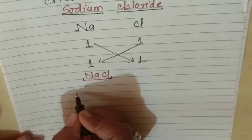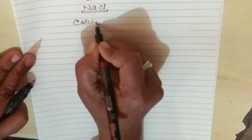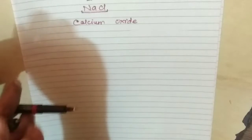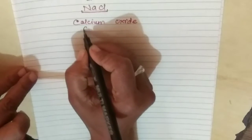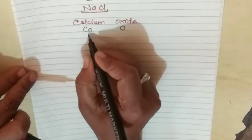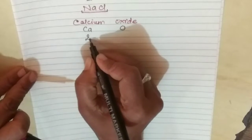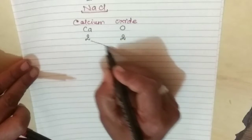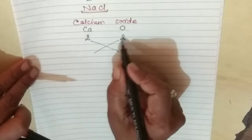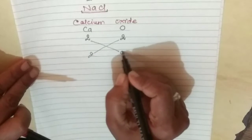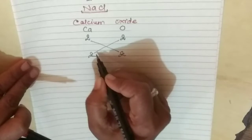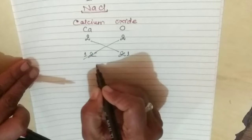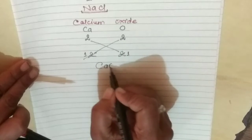The next example is Calcium Oxide. The symbol of Calcium is Ca and Oxide is O. The valency of Calcium is 2 and the valency of Oxide is also 2. We will criss cross both valencies. Since 2 and 2 are divisible, it becomes 1 and 1. That gives us CaO.